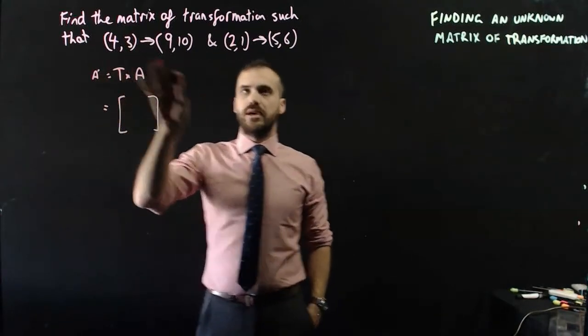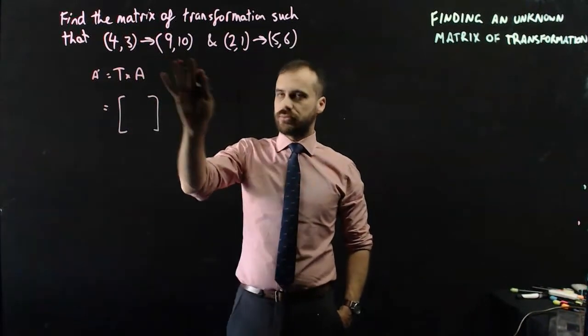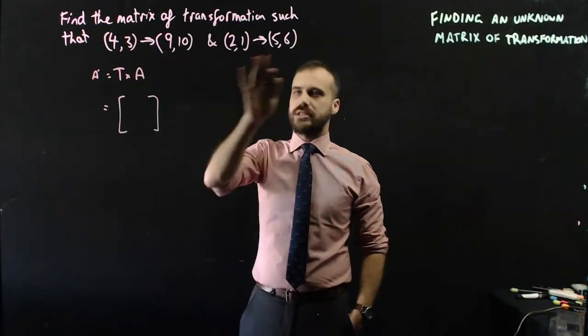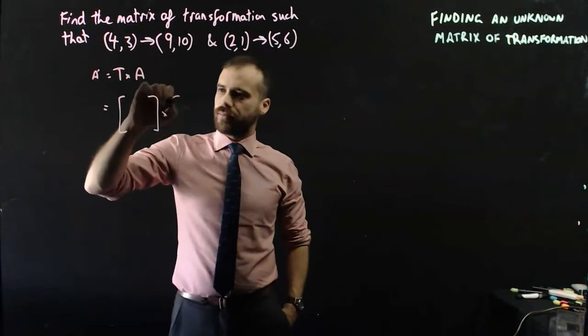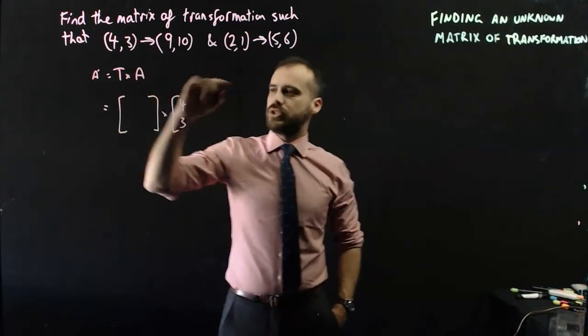We've got two objects here. We've got (4,3) and we've got (2,1), and they're mapping onto two images, (9,10) and (5,6). So, (4,3), (2,1).